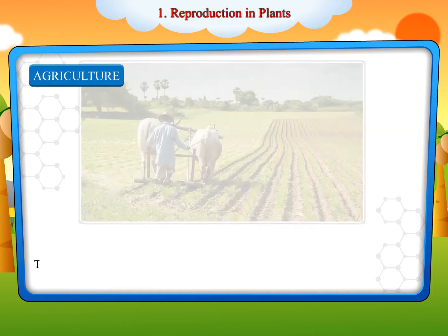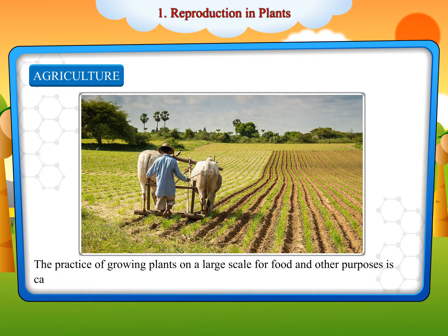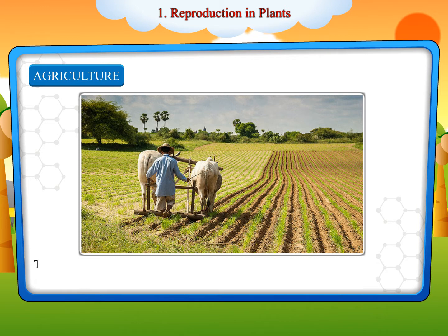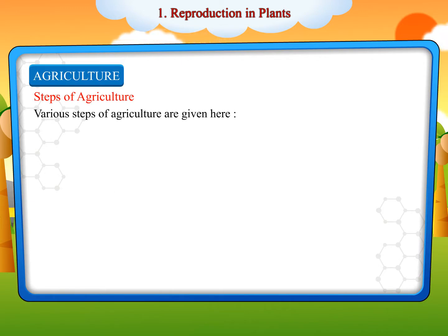Agriculture: The practice of growing plants on a large scale for food and other purposes is called agriculture. In India, agriculture has been practiced since ancient times. There are various steps followed in agriculture.